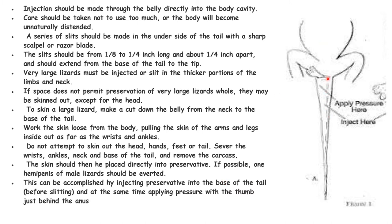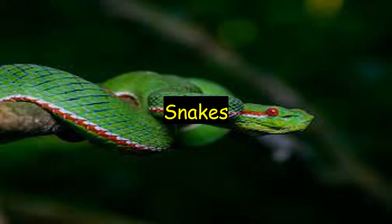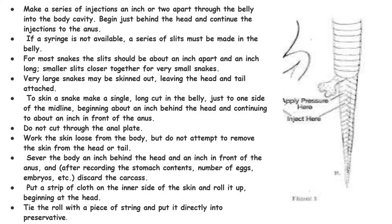If possible, the hemipenis — the reproductive organ — of male lizards should be everted. This can be accomplished by injecting the preservative into the base of the tail before slitting, and at the same time applying pressure with the thumb just behind the anus. Injection must be applied throughout the ventral region into the body cavity just behind the head and continued to the anus.